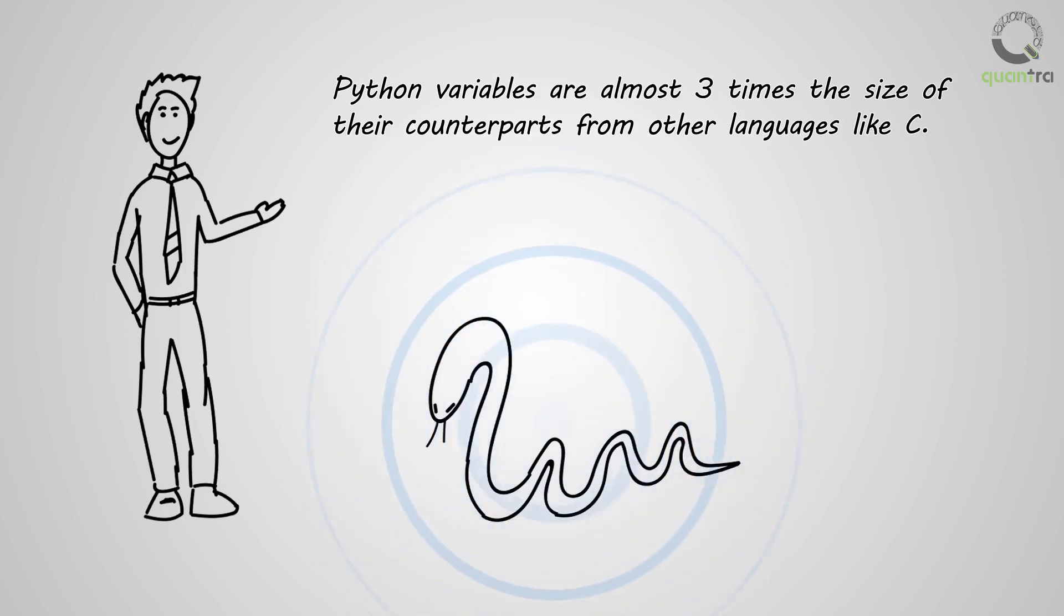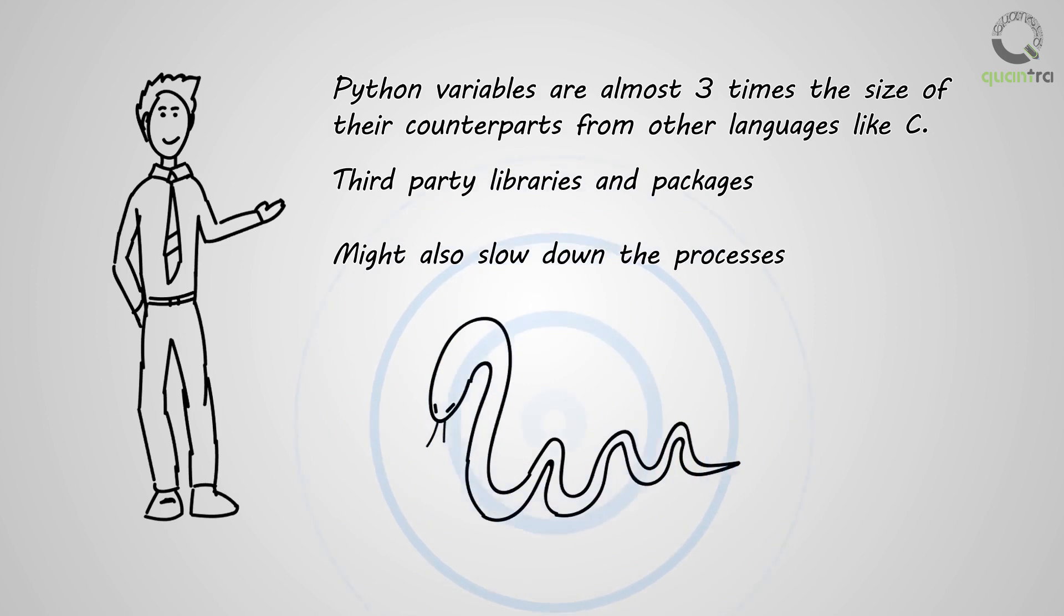If you are storing millions of values from large datasets and not managing memory carefully, it will lead to slow execution. Even though the availability of multiple third-party libraries and packages makes tasks easier, it might also slow down the processes. So you have to be careful while using third-party packages, and efficiently manage memory to take full advantage of what Python as a complete package has to offer.